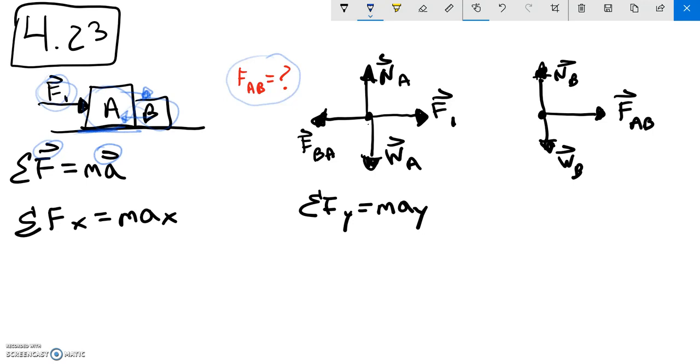Now the next concept is realizing what the accelerations are going to look like. This is moving only in the x and fixed in the y, so I know that the acceleration in the y has to be zero for both. The bodies are moving together, so I know that a_x